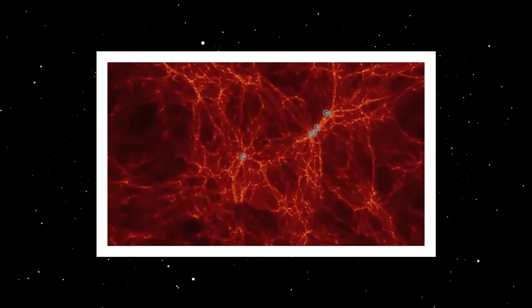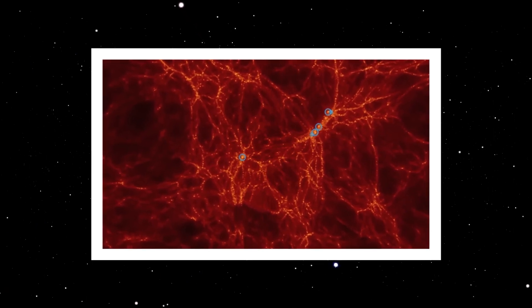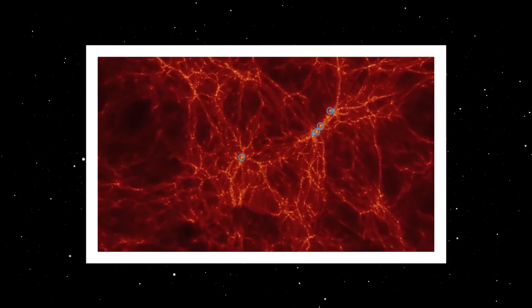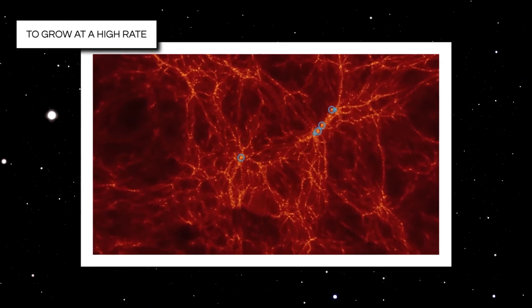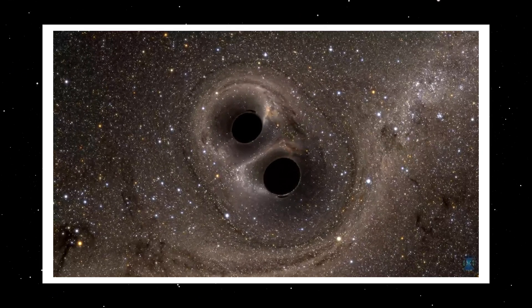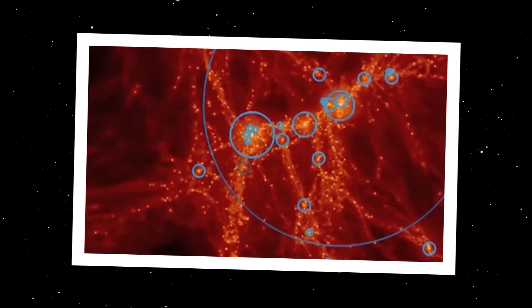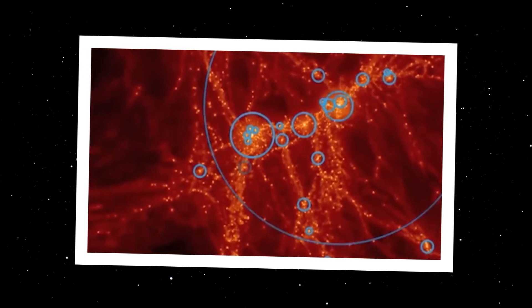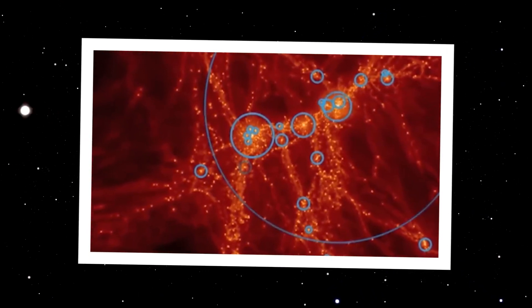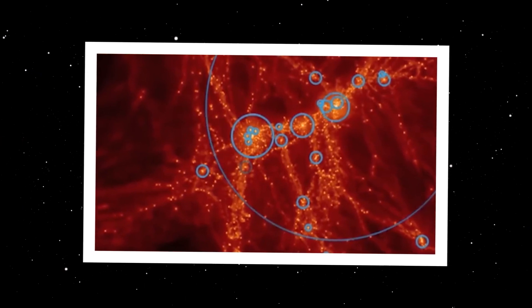As filaments converge and galaxies begin to appear, the matter feeds black holes, allowing them to grow at a high rate. Some black holes form pairs and go into orbit around each other, engaging in a cosmic dance. As these black holes gain mass, gravity pulls them toward the densest regions, where a few grow larger than all the rest.